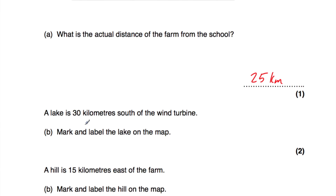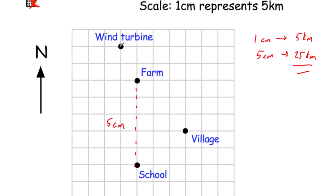Next, a lake is 30 kilometers south of the wind turbine — mark and label the lake on the map. 30 kilometers: each centimeter is five kilometers, so 30 divided by five is six. It's going to be six centimeters, because six lots of five is 30. And it says south — north is up, so south is down. It's going to be six centimeters south of the wind turbine. Go to the wind turbine and count six centimeters south: one, two, three, four, five, six. That's where the lake will be.